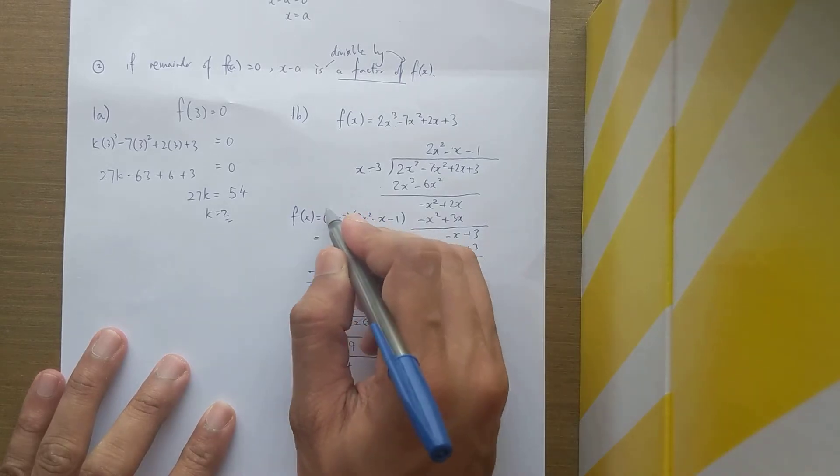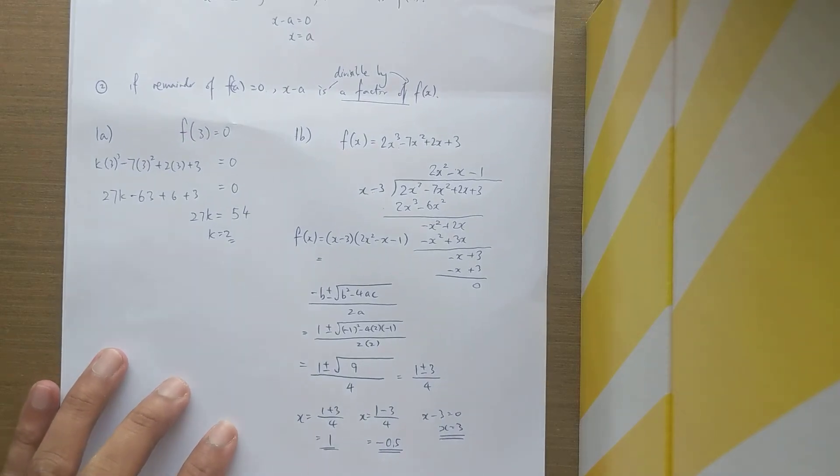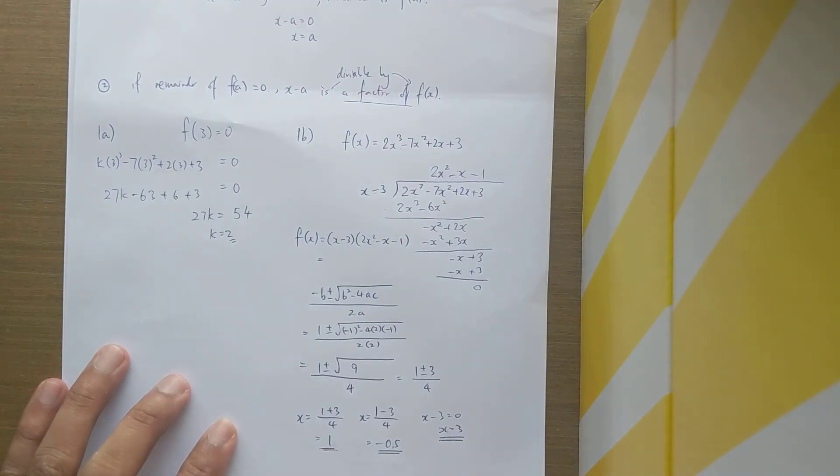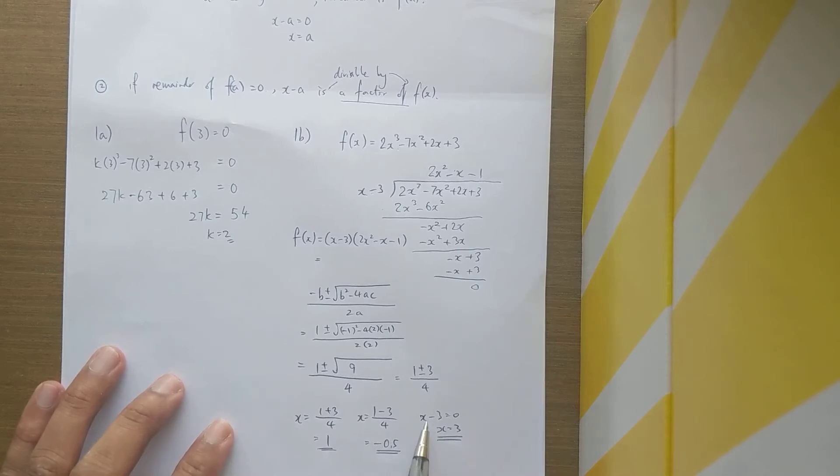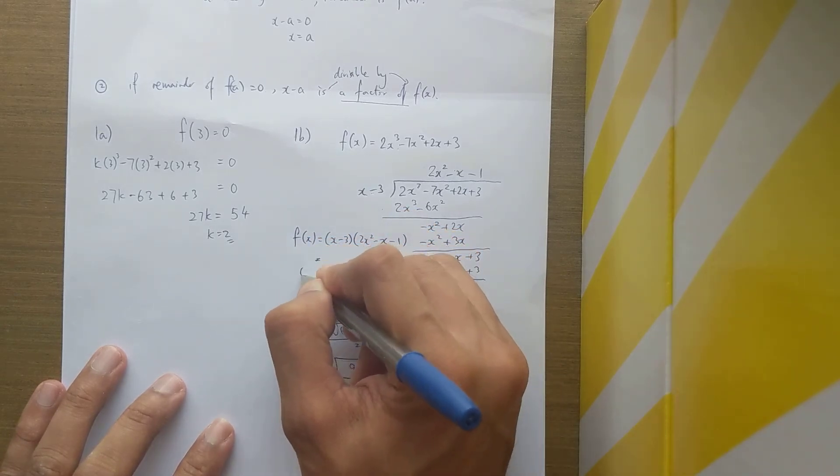And then with the original first option of x minus 3 equals 0, x is equal to 3. So actually there's three different answers in here, and they are all rational because 1 is obviously a rational number, and 0.5—anything that ends or repeats is rational. So this one ends at 0.5, it's a rational number. Then obviously the original first factor x minus 3 will give you x equal to 3, so therefore you have three factors in this case.